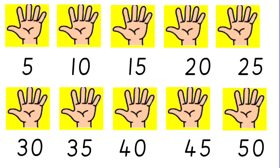Let's warm up by counting fives together all the way to 10 times 5 is 50. Let's go. 5, 10, 15, 20, 25, 30, 35, 40, 45, 50.